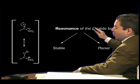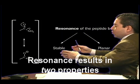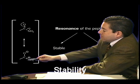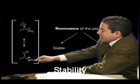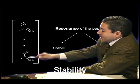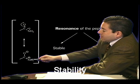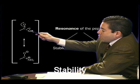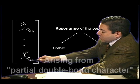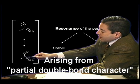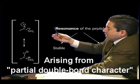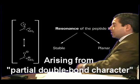This resonance of the amide, or peptide bond, results in two properties: stability and planarity. Why is it stable? Because the carbon-nitrogen linkage, which is the actual amide linkage, is more energetically stable than a pure single bond — not quite as much as a double bond, but more energetically stable than a single bond. It has what's called partial double bond character, and hence the carbon-nitrogen linkage is very stable relative to a single bond.